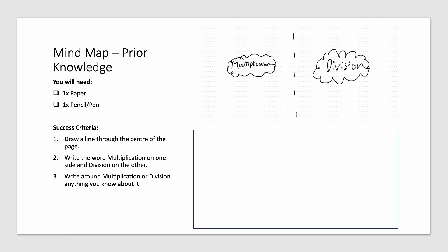Firstly, draw a line through the centre of the page. Then, write the word multiplication and division on both sides.